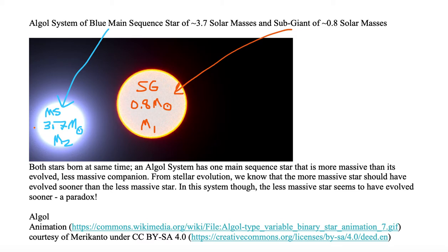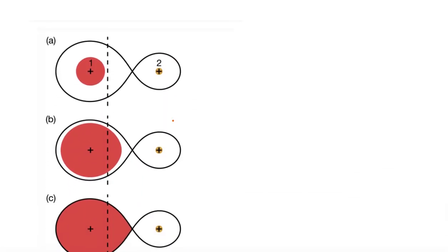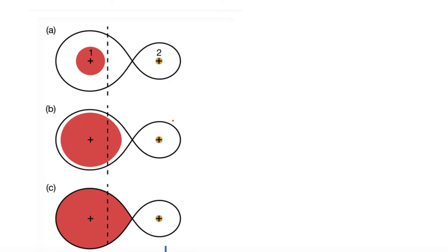So, in order to resolve it, either we don't understand evolution, or something must be going on in this particular Algol system. We think it's the latter. Something's going on with this system. How can we end up with a situation where the less massive star is the evolved star? Let's take a look at how we may have come about with this Algol system.